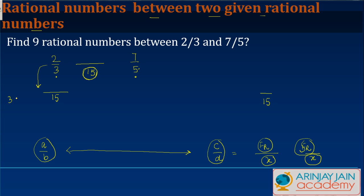To make 3 into 15 what do I need to do? I need to multiply 3 by 5. But if I am multiplying the denominator by 5, I need to multiply the numerator also by 5, otherwise the value is not going to remain equal to this number.